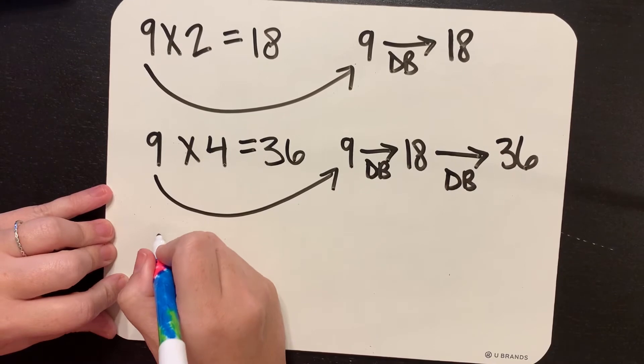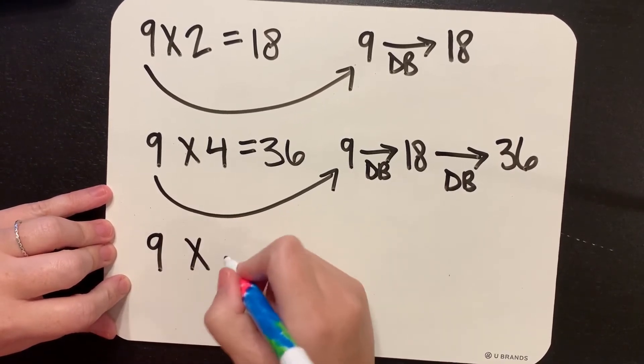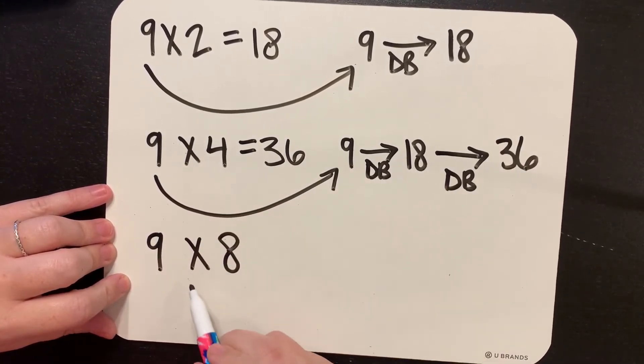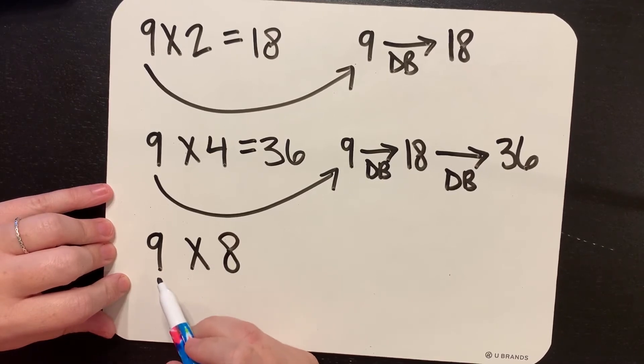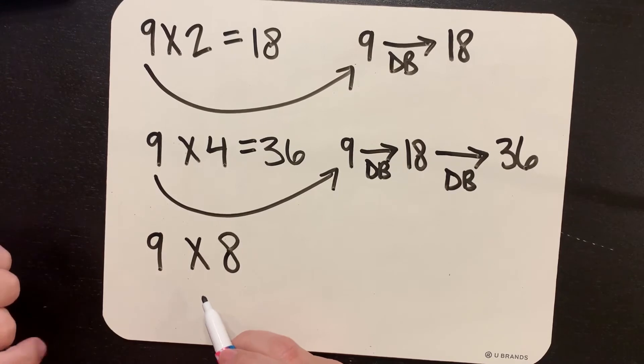The last one for this set of problems is going to be 9 times 8. When you're multiplying by 8, you're going to double your other factor three times. So we call times 8 double, double, double.